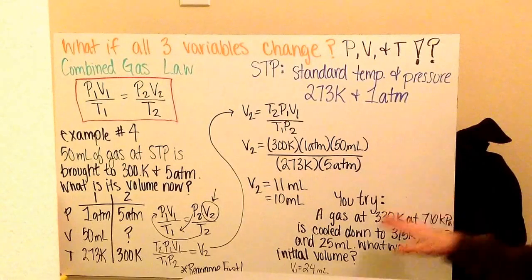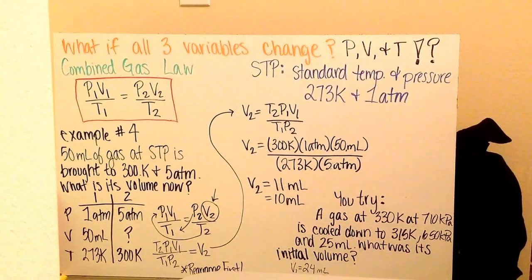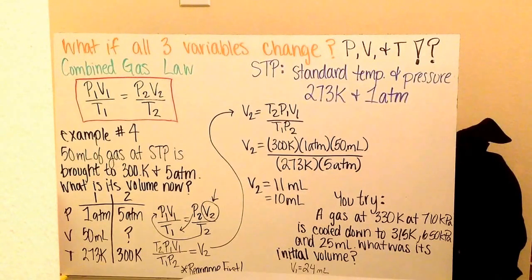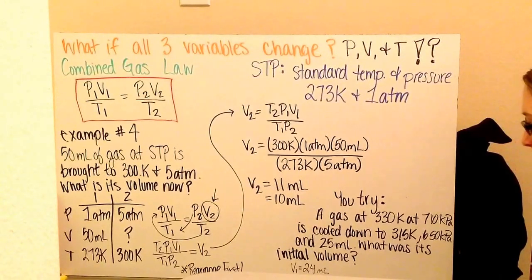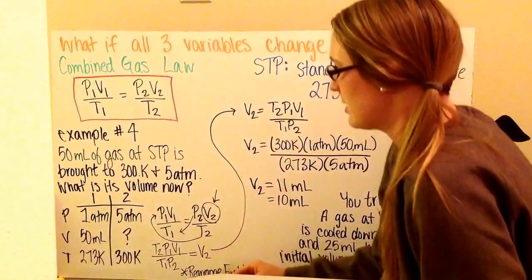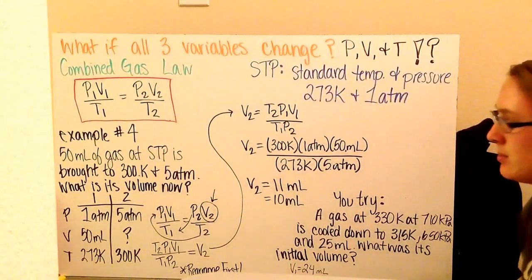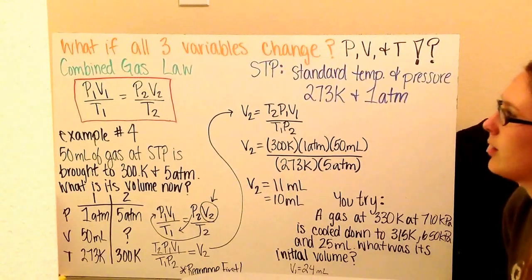Now you try: a gas at 330 Kelvin and 710 kilopascals is cooled down to 315 Kelvin and 650 kilopascals, with a final volume of 25 milliliters. Find its initial volume. Do the same setup, except now solve for V1 — rearrange your equation. You should get an initial volume of 24 milliliters. This concludes the video about the basic gas laws. Please rewatch again if you have any questions.